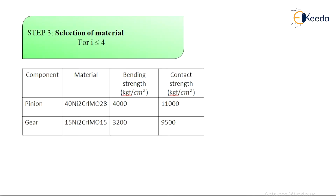Step 3 is the selection of material. For i ≤ 4, the pinion material is selected as 40Ni2Cr1Mo28 having a bending strength of 3200 kgf/cm² and contact strength of 11,000 kgf/cm². For the gear, the material is 15Ni2Cr1Mo15 having a bending strength of 3200 kgf/cm² and contact strength of 9500 kgf/cm².